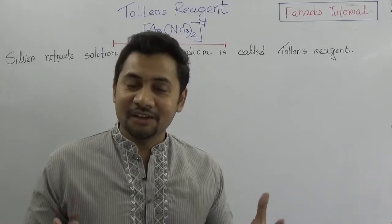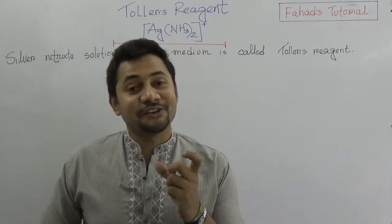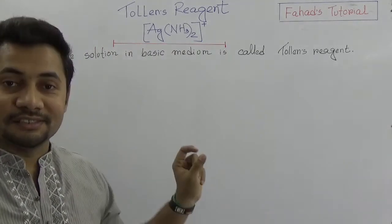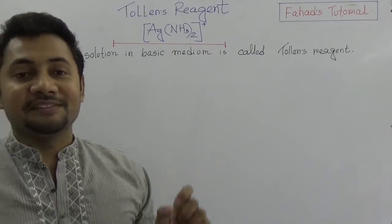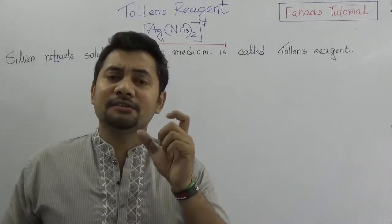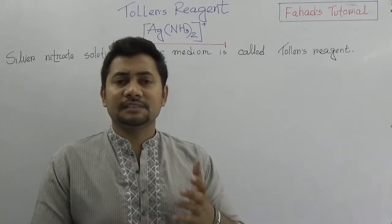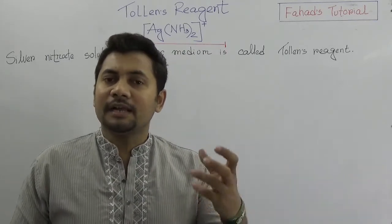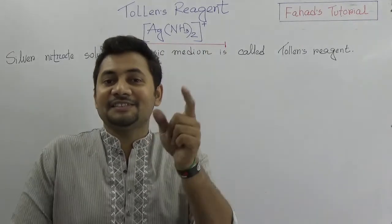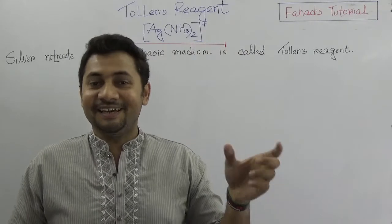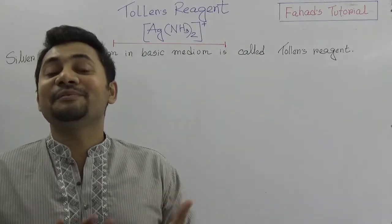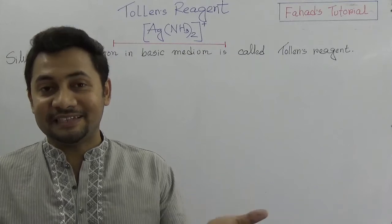Let's study about Tollens' reagent. So what is Tollens' reagent? Simply, the silver nitrate solution in basic medium is known as Tollens' reagent. When Tollens' reagent reacts with organic compounds like aldehyde, silver ions accept electrons, get reduced, and precipitate as silver metal, and then we can identify aldehyde.